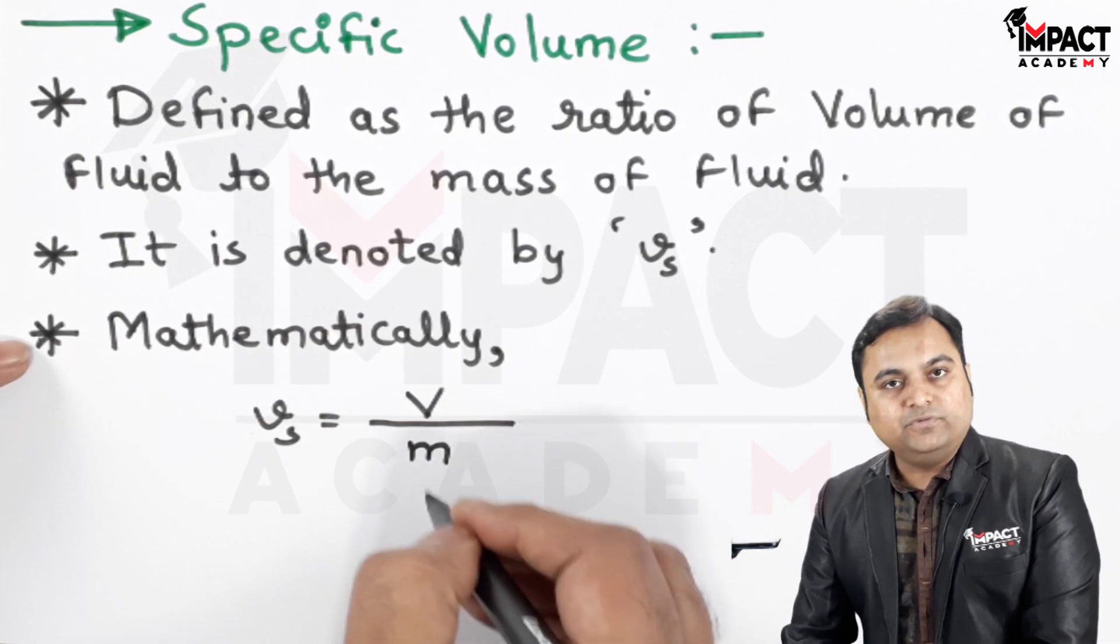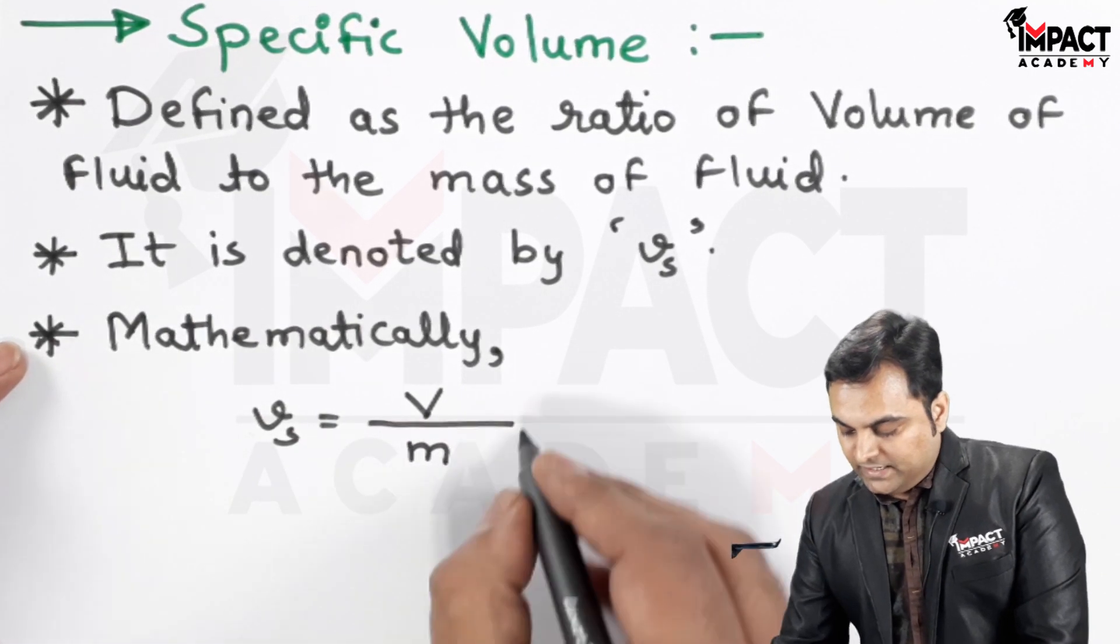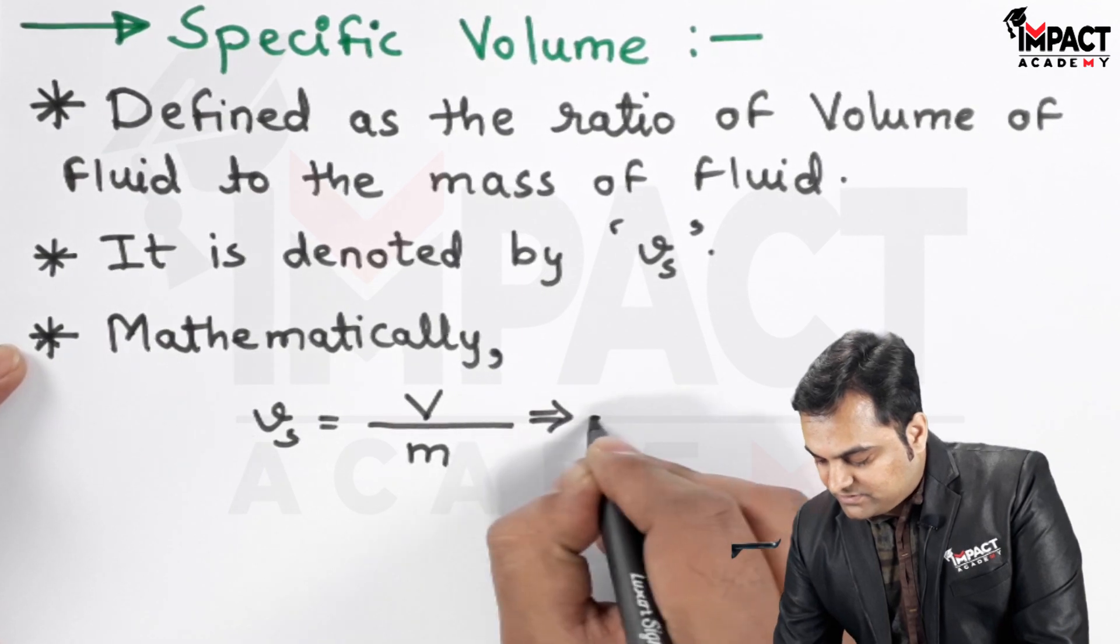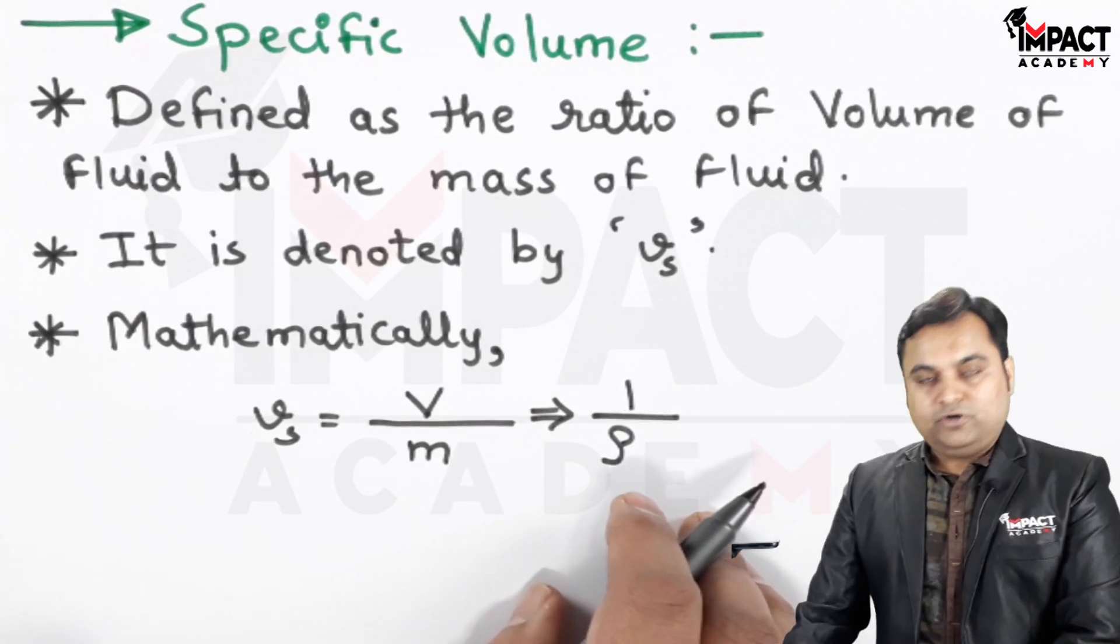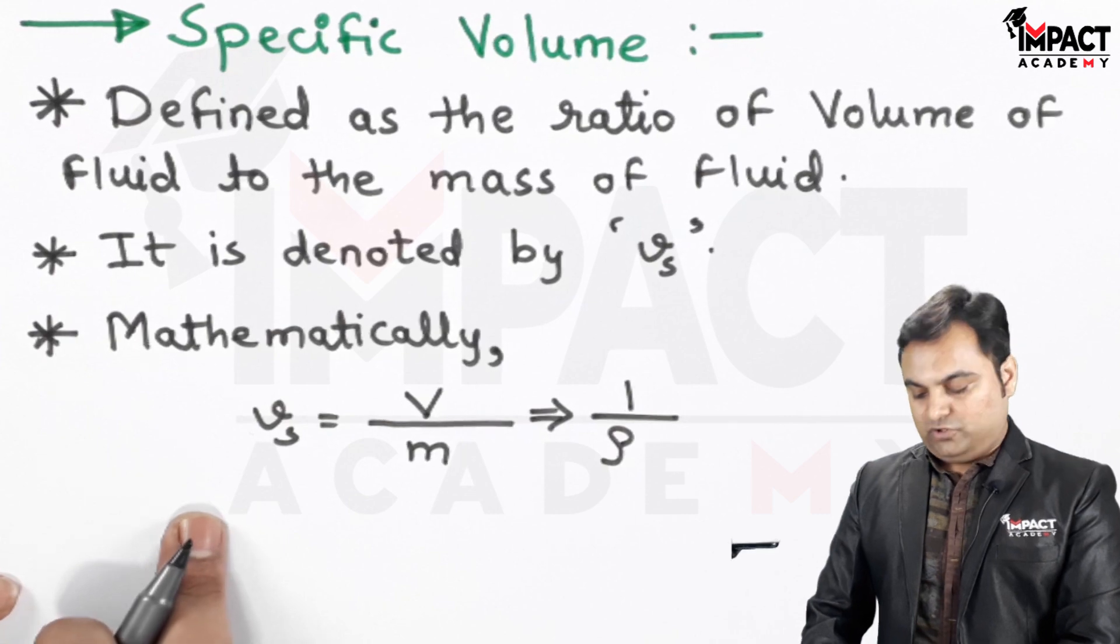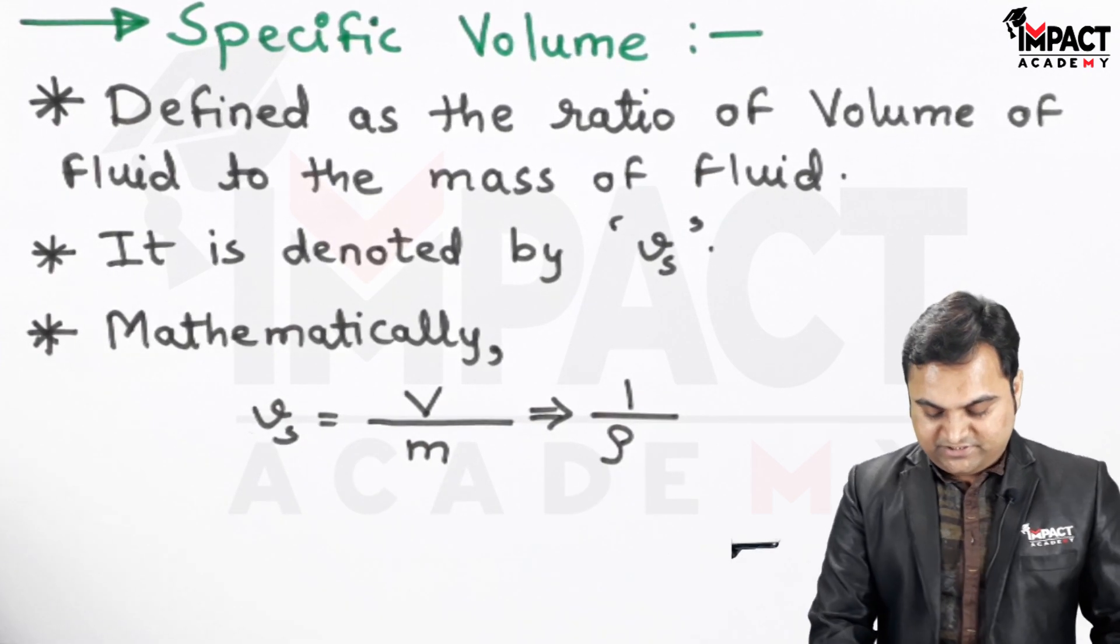And from this we can also see that it is the reciprocal of mass density, because mass density is mass upon volume, specific volume is volume upon mass, so they are reciprocal.